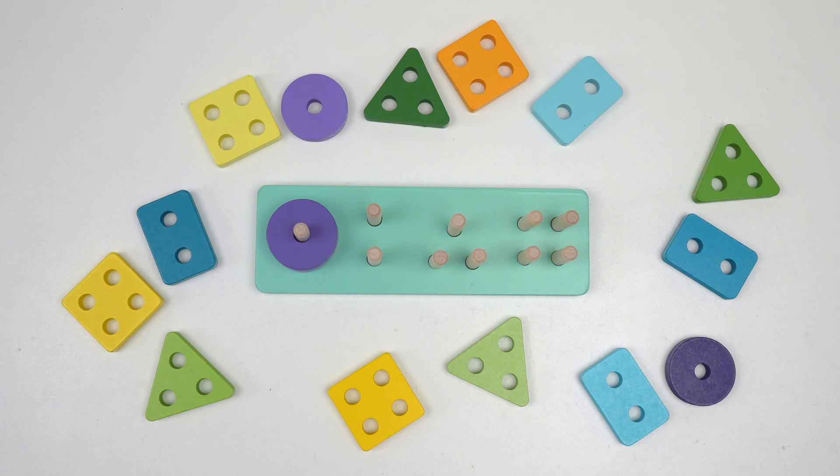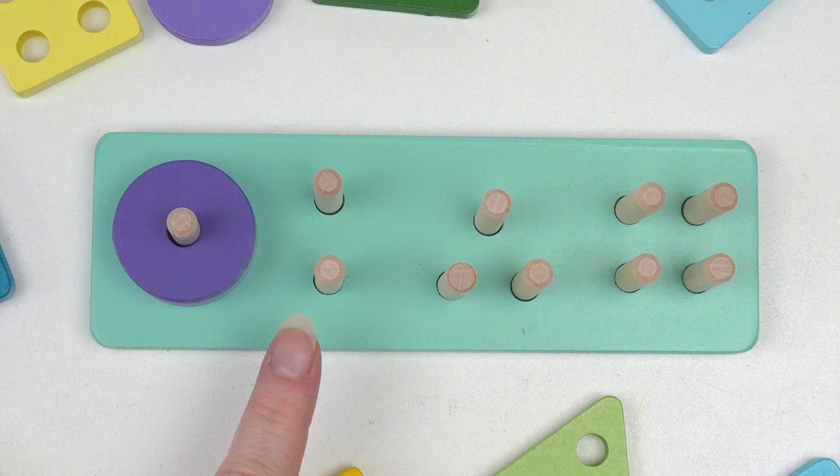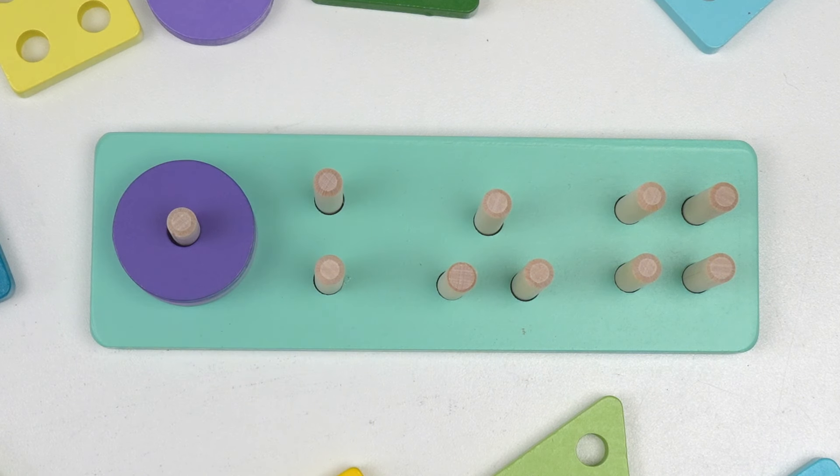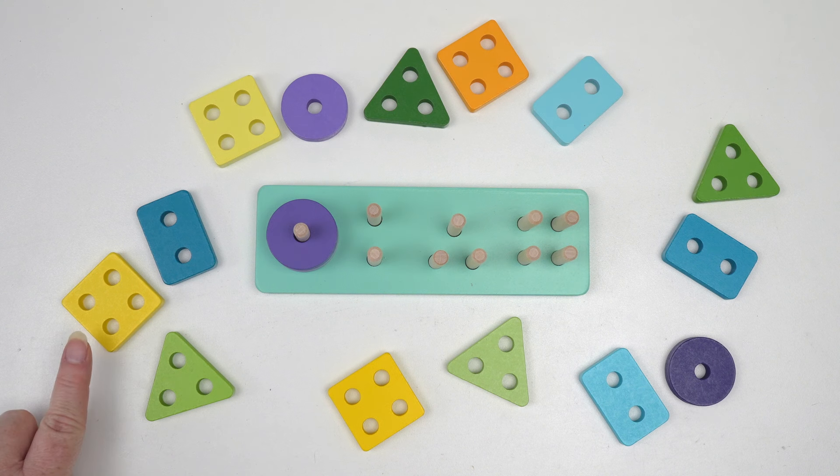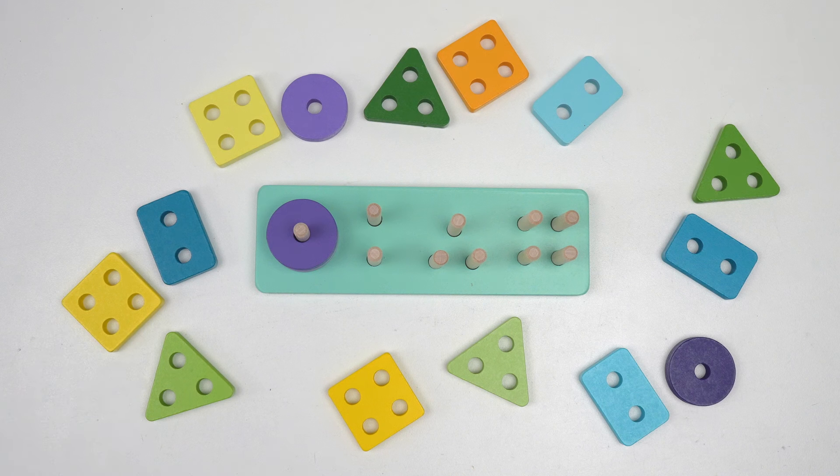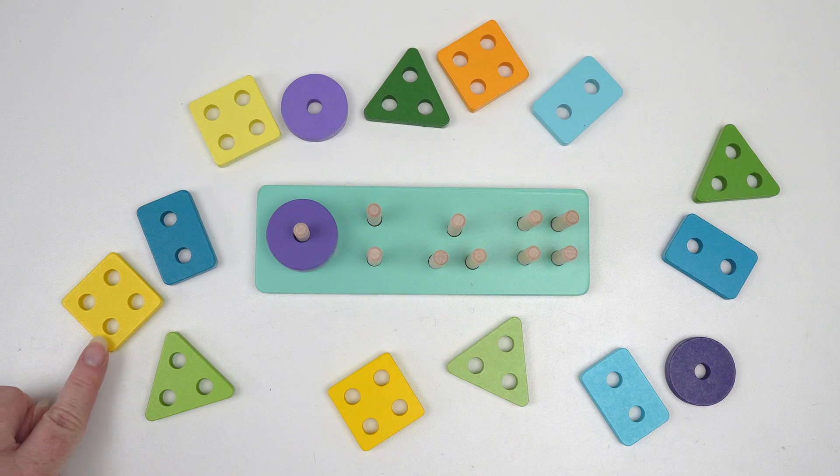Let's look for our next shape. Our next set has one, two pegs. Does this shape have two holes? No, it has one, two, three, four holes.